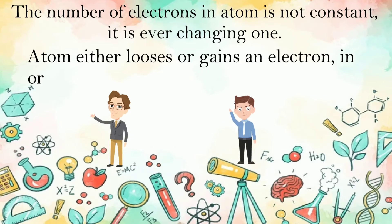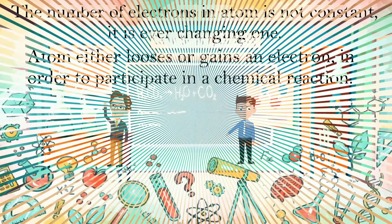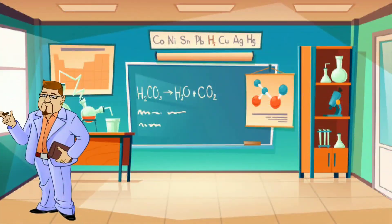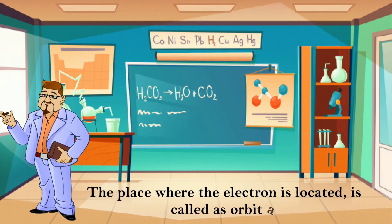Atom either loses or gains an electron in order to participate in a chemical reaction. The place where the electron is located is called an orbital.